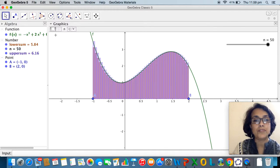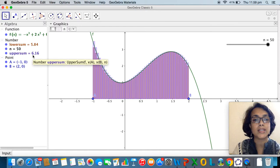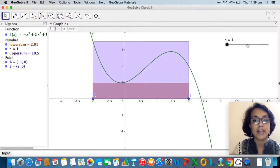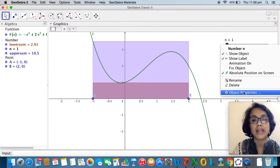When n becomes 50 notice that the lower sum is 5.84 square units and the upper sum is 6.16, so there is a difference between the lower and the upper sum. Now let me right click on the slider n.